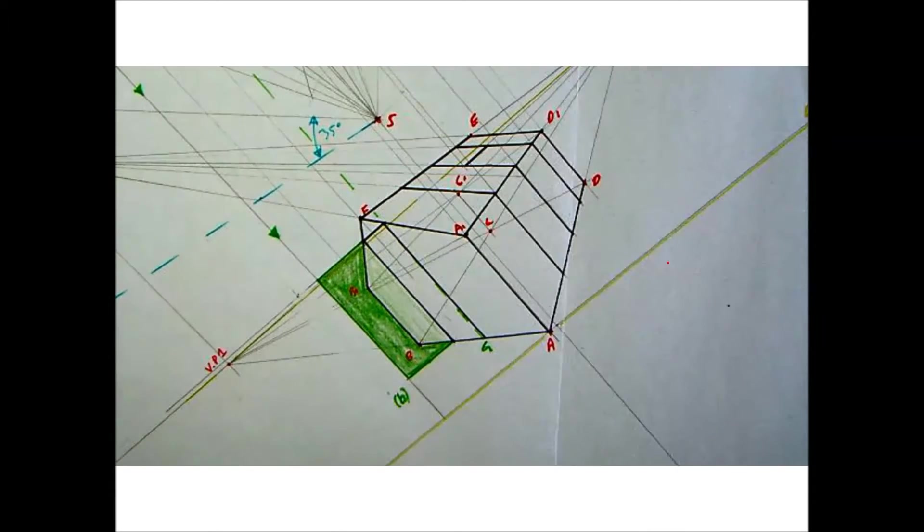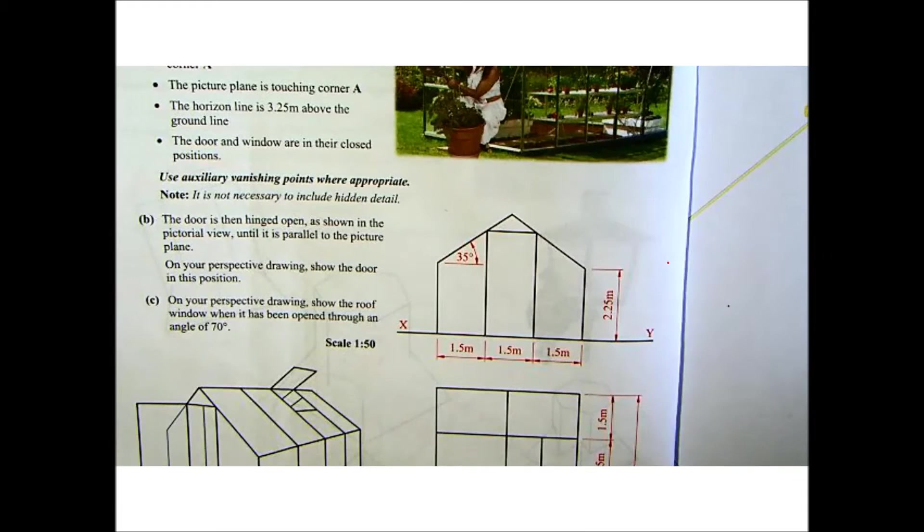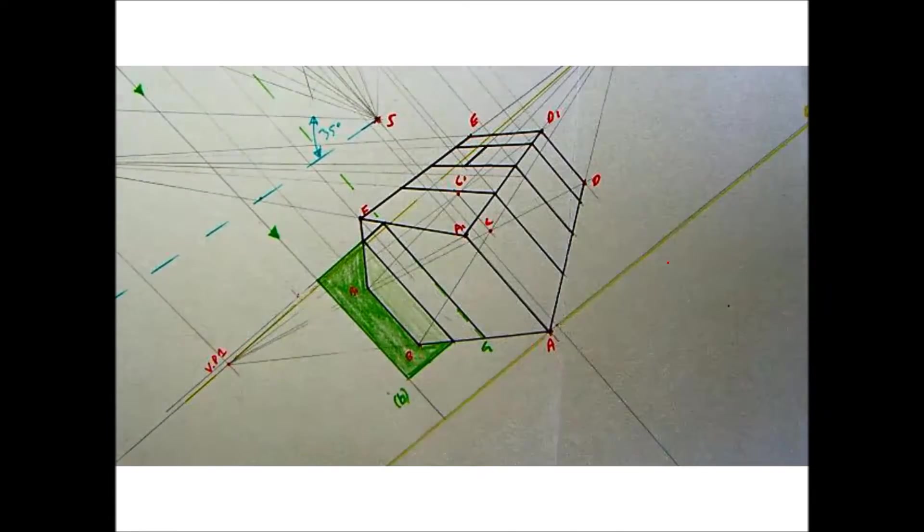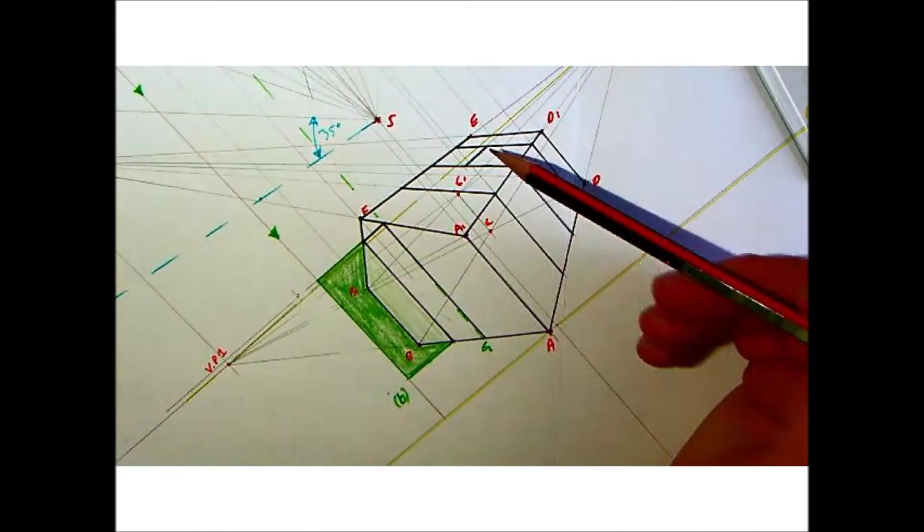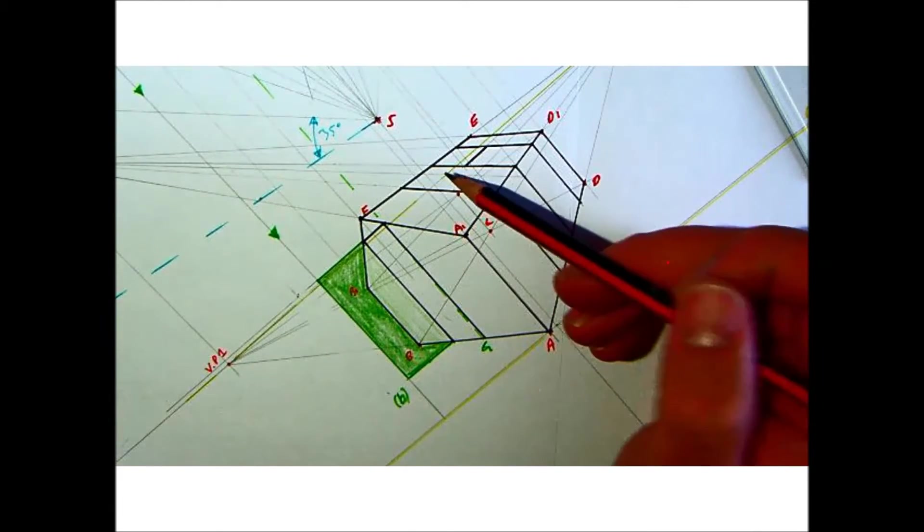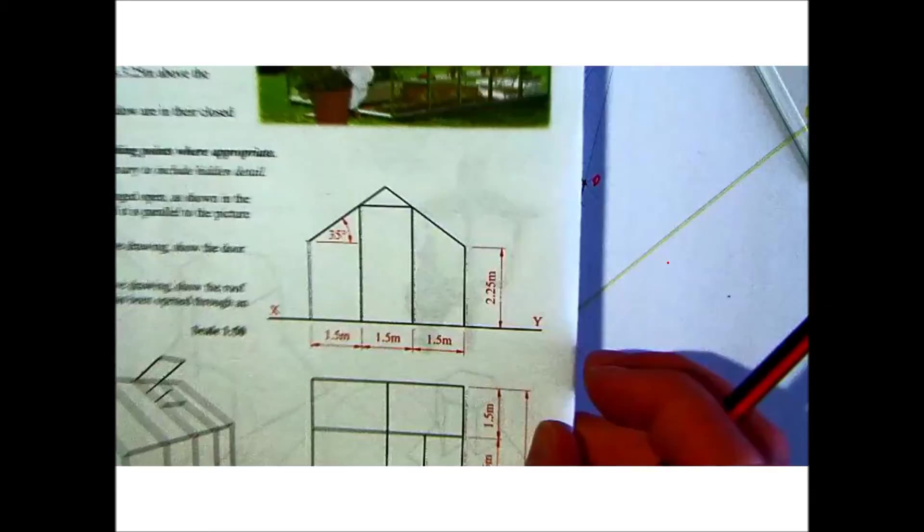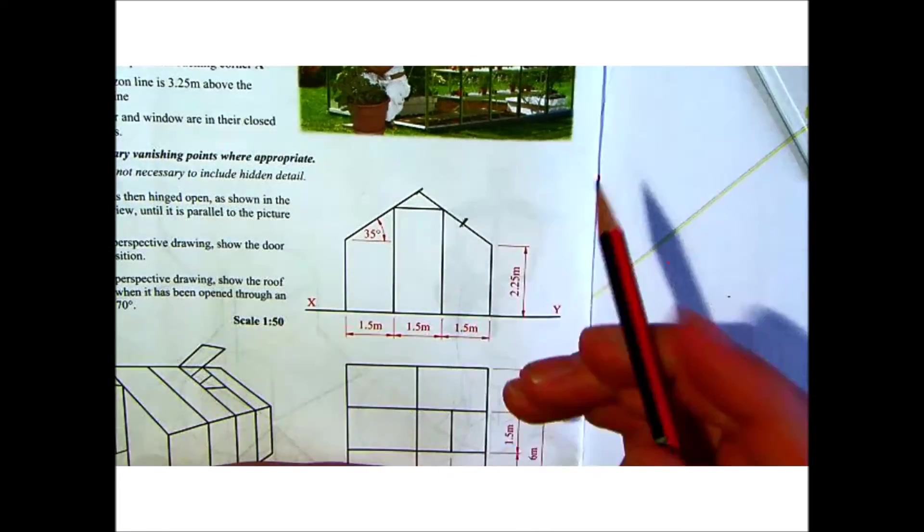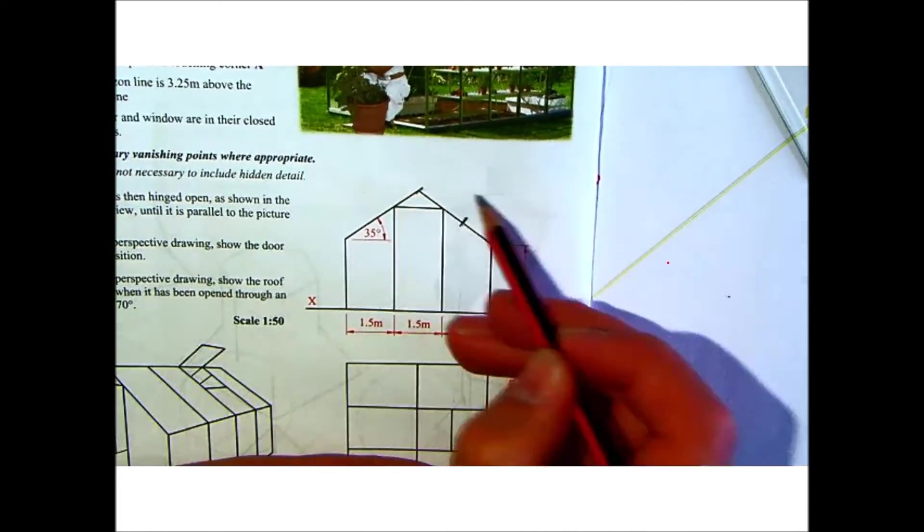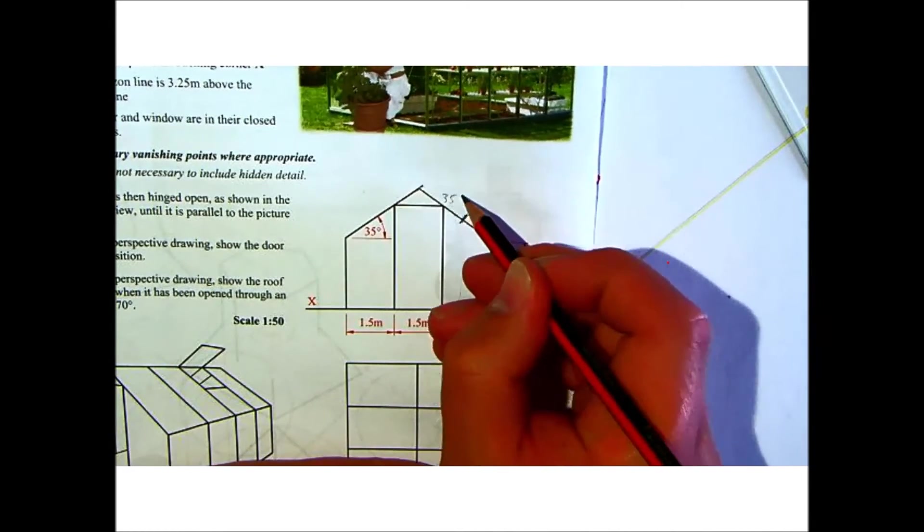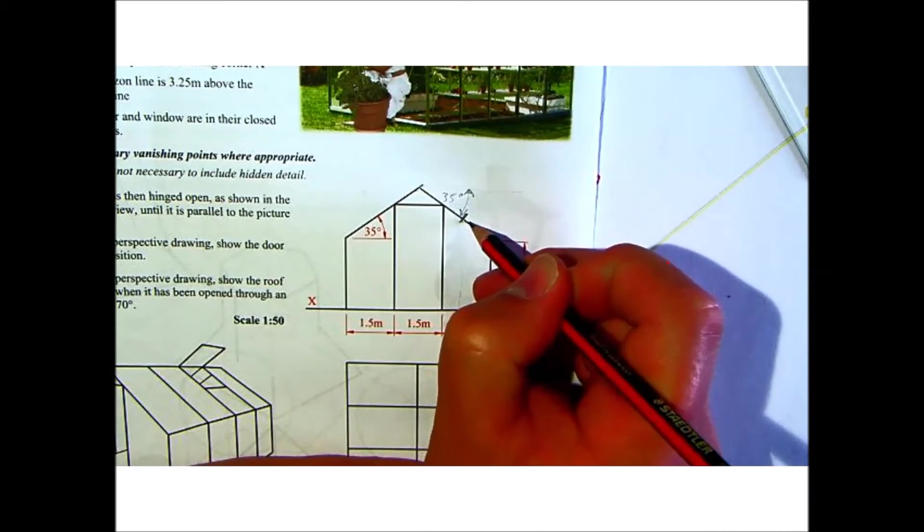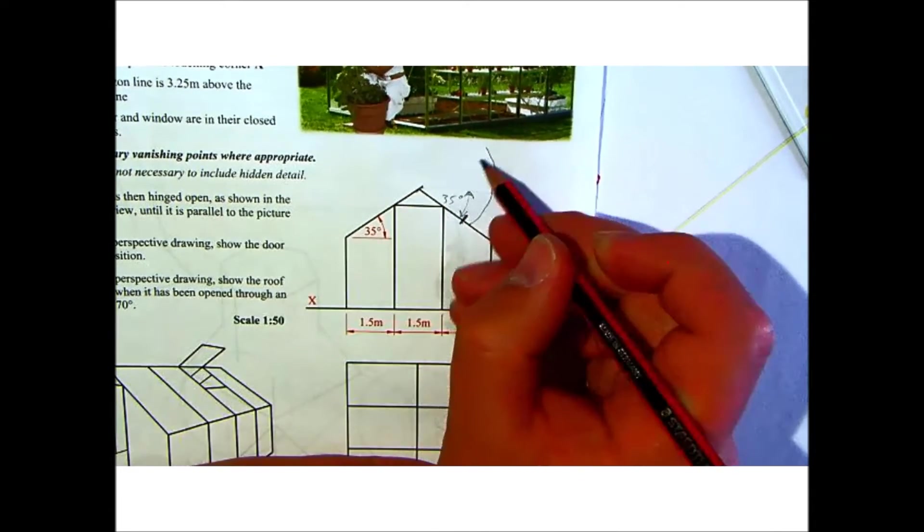All right now next part, part C. On your perspective drawing show the roof window when it has been opened to an angle of 70 degrees. So a roof window, if you see here on the perspective, is this section of it here, and we have to show that opened through 70 degrees. Now if you look at the question, if you look at the elevation, this part from here to here is our roof window. From the XY line it's already 35 degrees down this direction, and it said show it opened 70 degrees. So if it's going to be opened 70 degrees, this is 35 and then another 35 will give you your 70.